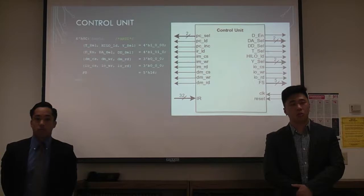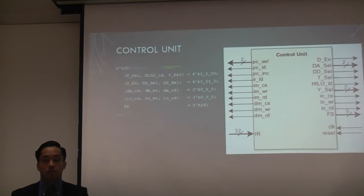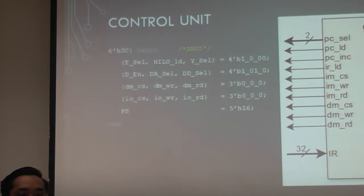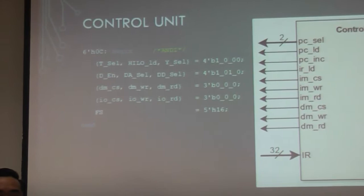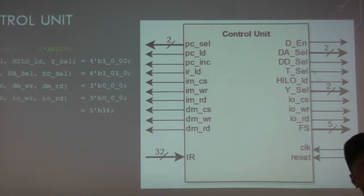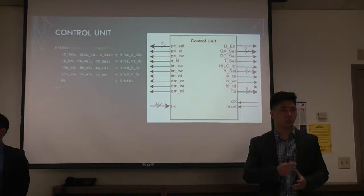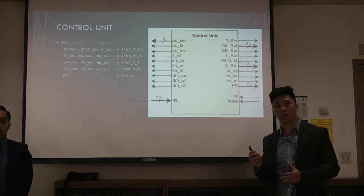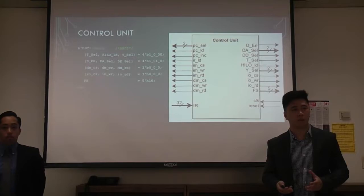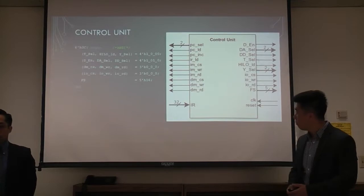To make our pipeline work, we needed a control unit. This control unit acts as a control signal generator — every signal is generated from the very beginning and then propagates through the integer data path. For example, an ANDI instruction requires a T-select signal to allow an immediate value to come in, a T-enable signal to allow write-back to the register file, and T-select to use the T address rather than the D address as its destination.